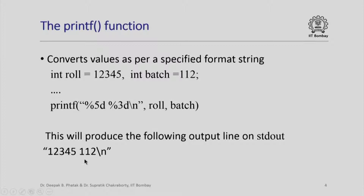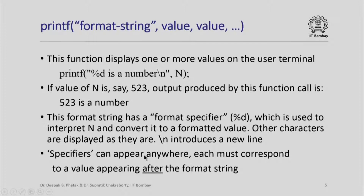The general format of printf is as follows: it displays one or more values on the terminal. If the value of n is 523, this printf statement will produce "523 is a number". In this format string, %d is the only format specifier — there is no width specified like 3d or 5d. So it will simply convert n and whatever number of digits are in n will be printed. So 523 is printed out followed by " is a number\n". All characters other than the format specifier are simply reproduced as they are. The newline character will take the cursor to the next line. In short, the format string has format specifiers; all other characters are displayed as they are.